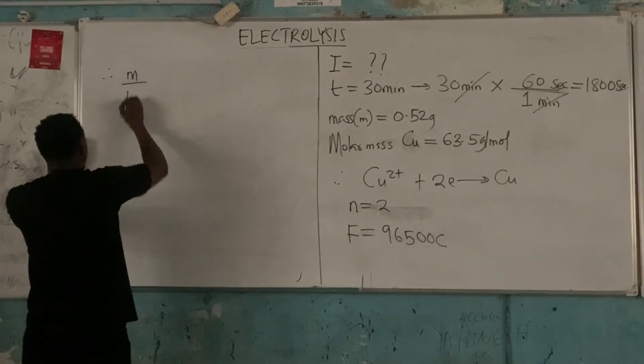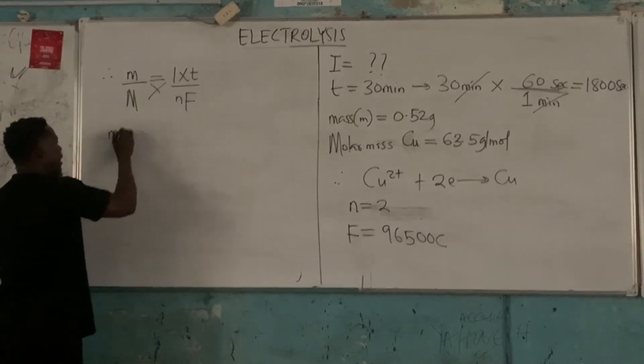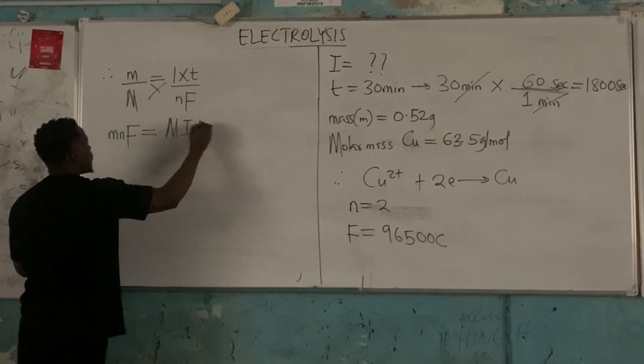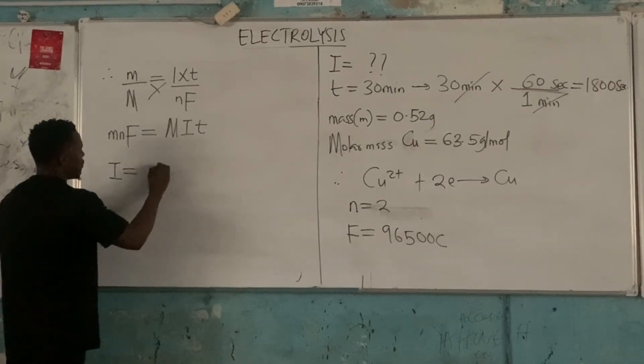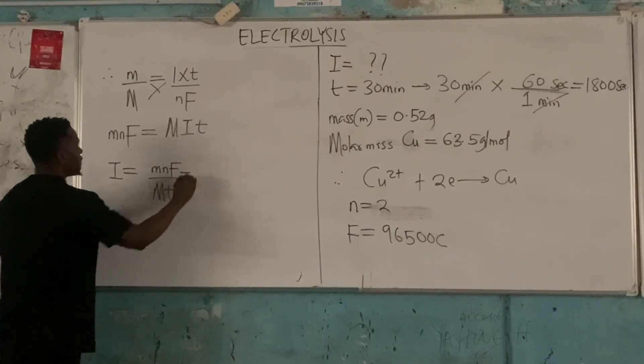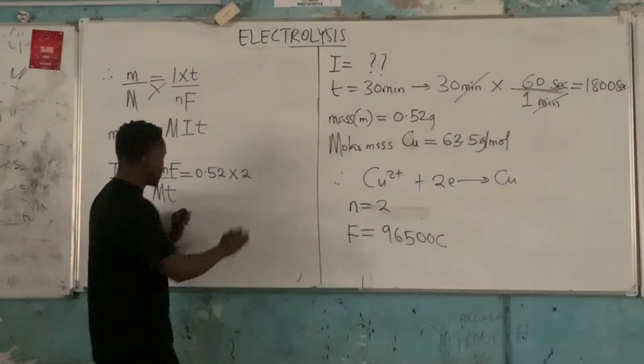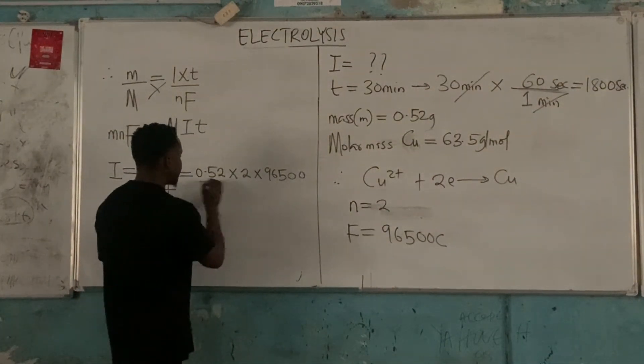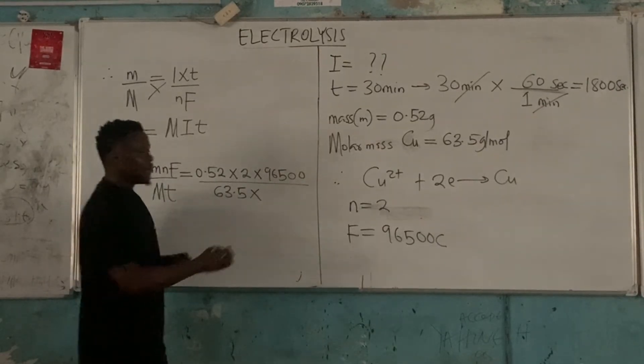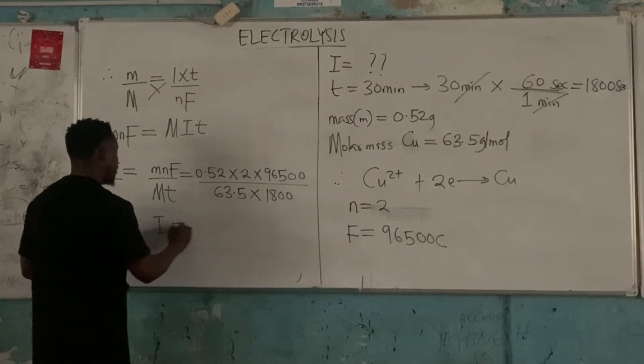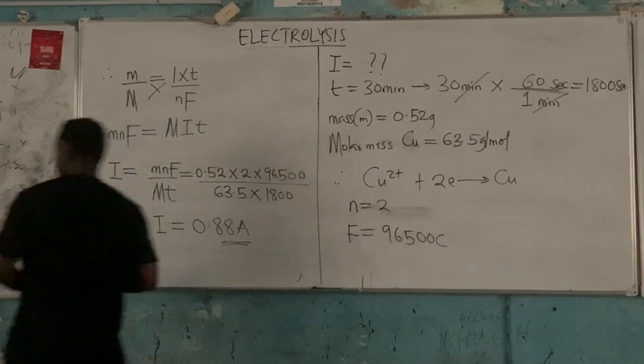So therefore, m over M equals to I times t over nF. Now I is what I am looking for. If I make I subject of the formula, I becomes equals to mnF divided by Mt. My mass is 0.52, my n is 2, and my F is 96500. This is divided by the molar mass of copper, which is 63.5, and the time is 1800. So let's verify that.